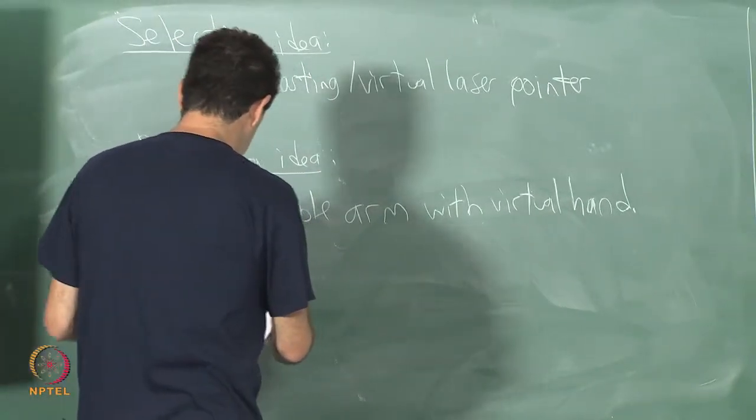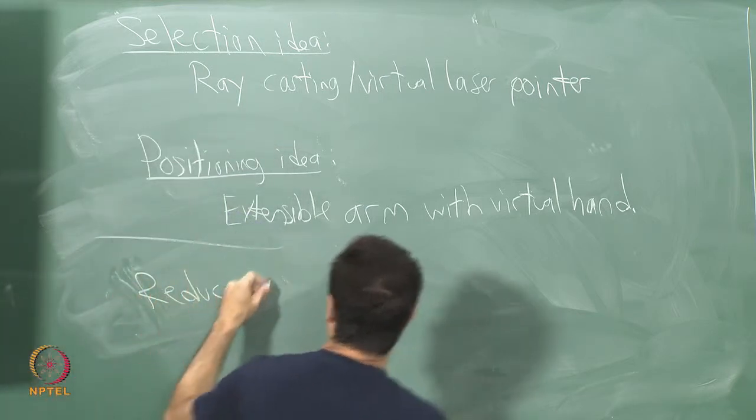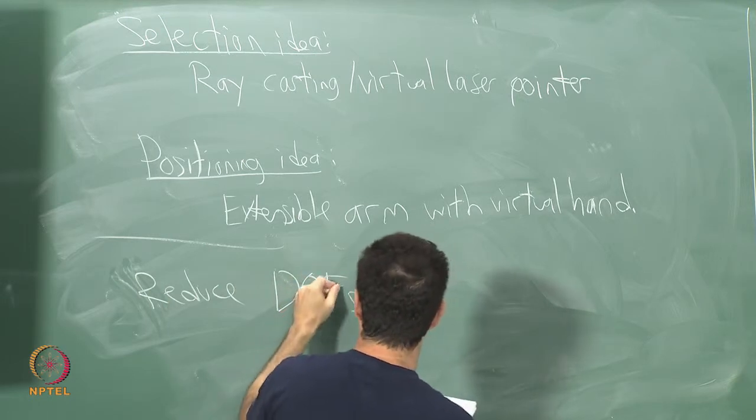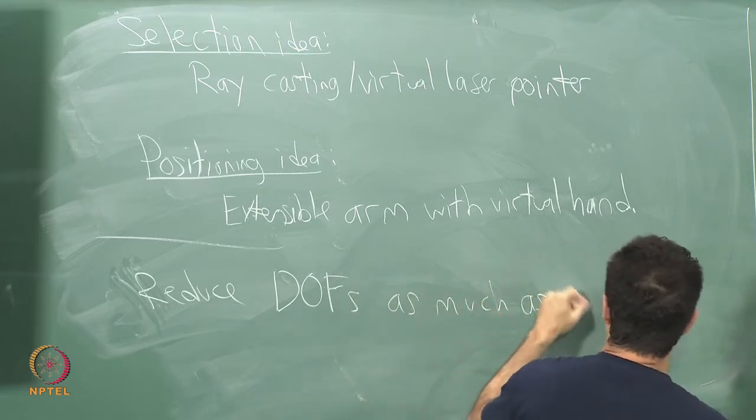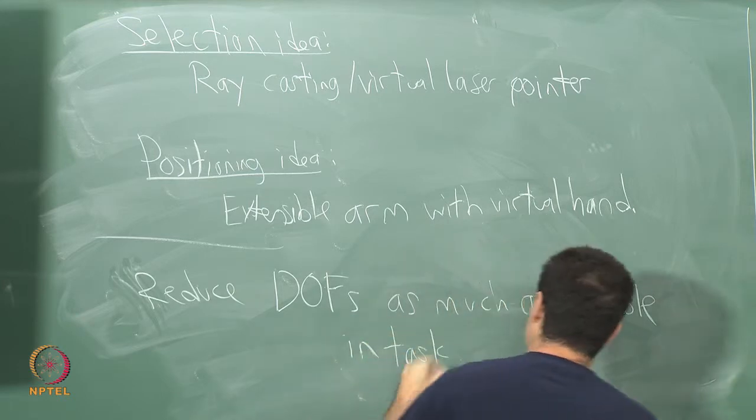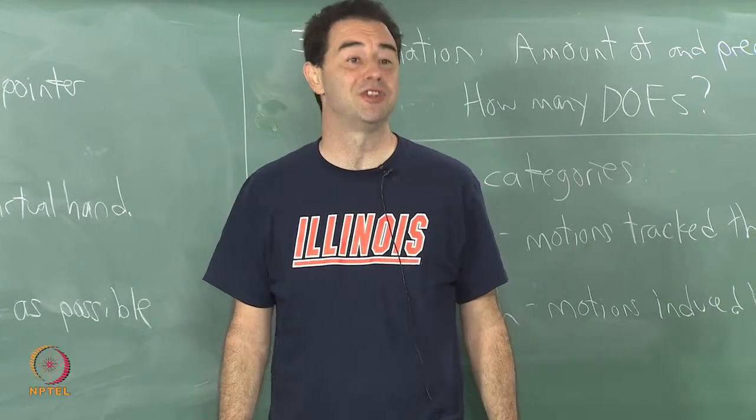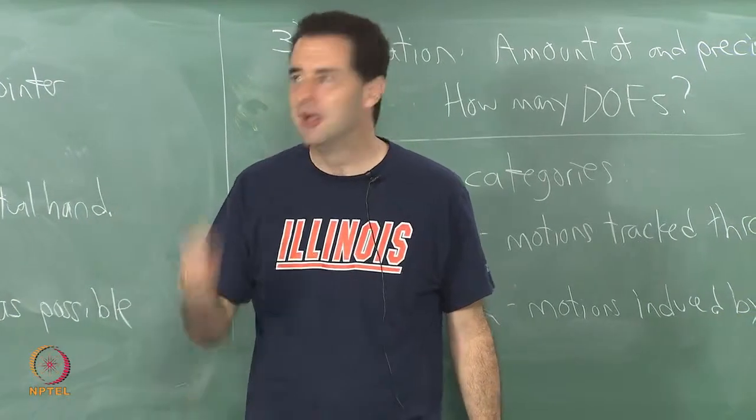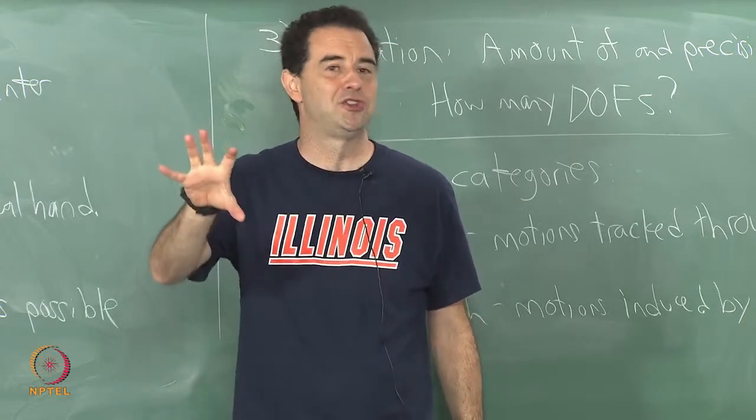Now one general principle is to reduce the degrees of freedom as much as possible in the task. Think about your application, think about what you want the user to be doing. A beautiful example that is Minecraft, right? When you are manipulating objects in Minecraft, it is extremely simplified. You grab objects, they go into your inventory, you quickly throw them back out again. You do not worry about placing things in a very precise way using all six degrees of freedom.